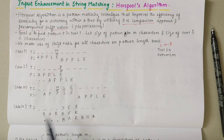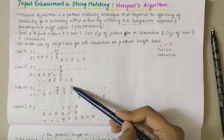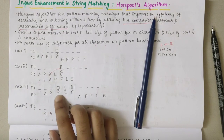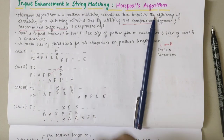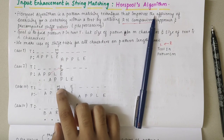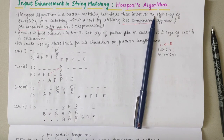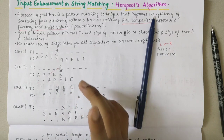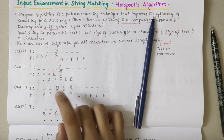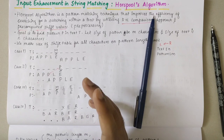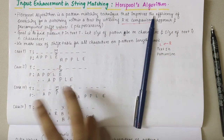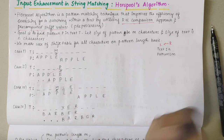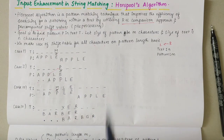Third case: I have some text and pattern is 'apple'. E is matching, L is matching, but M and P are not matching. Now I check if M is occurring anywhere in the pattern text — M is not occurring here anywhere. So this situation is similar to case one, but now the pattern should be shifted by the entire pattern length M. Here we are also shifting by M places.